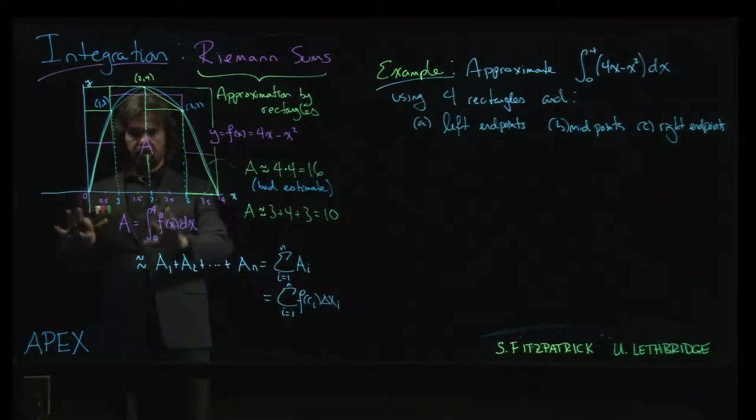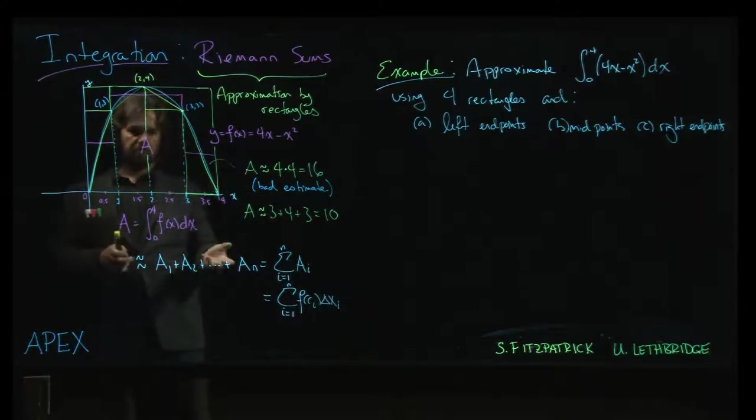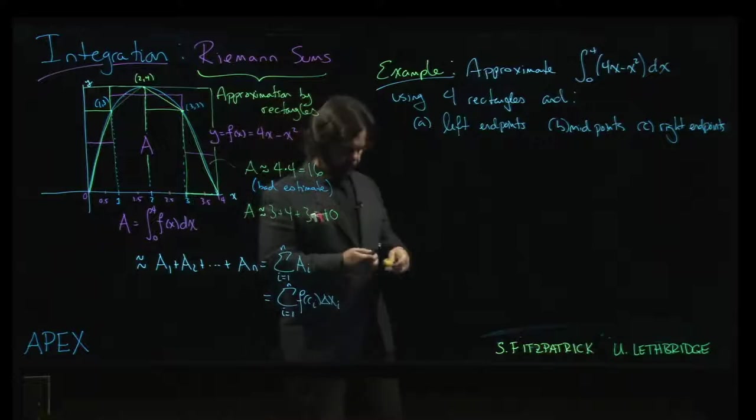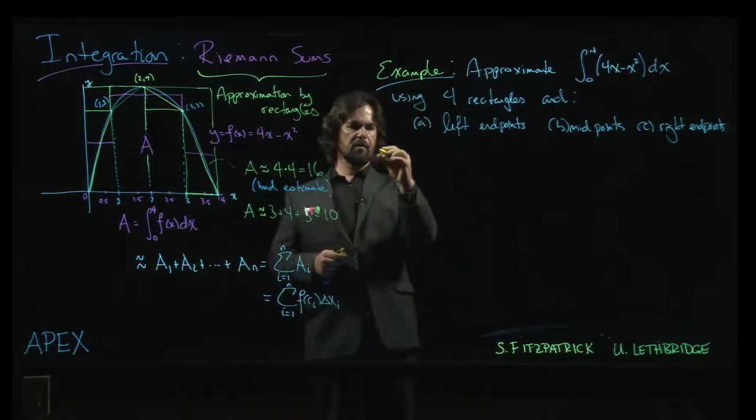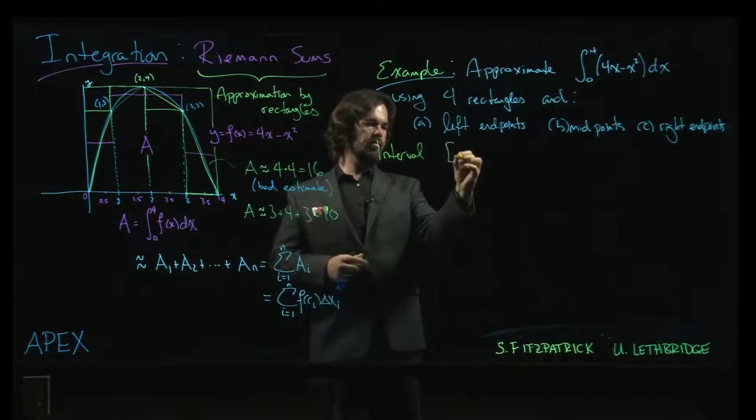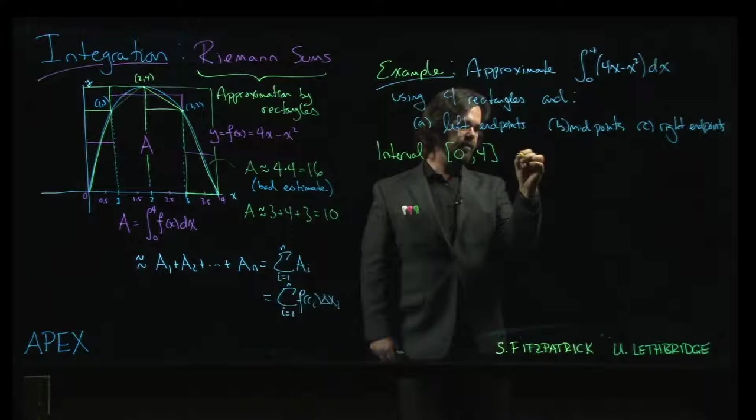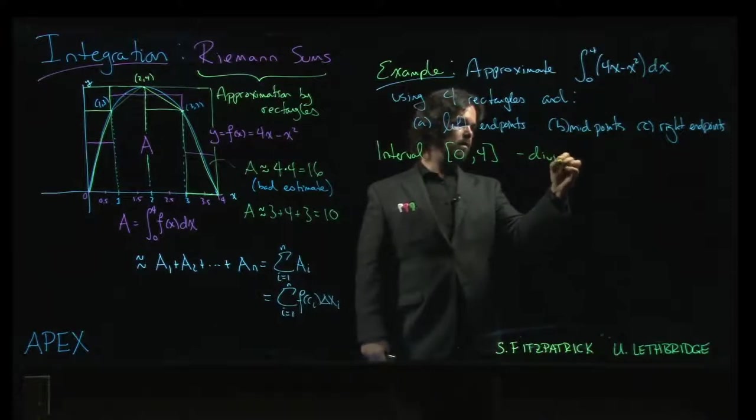We'll examine left endpoints, right endpoints, and midpoints for four rectangles. What are the different approximations that we get? Our interval is from zero to four and we're going to divide that into four subintervals.